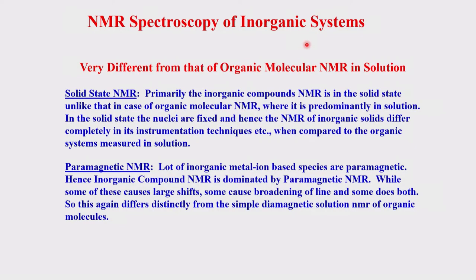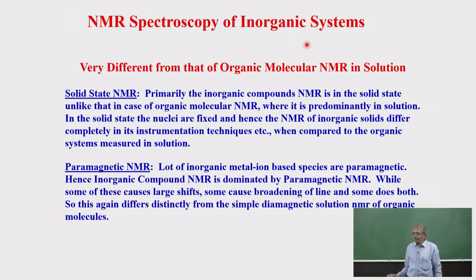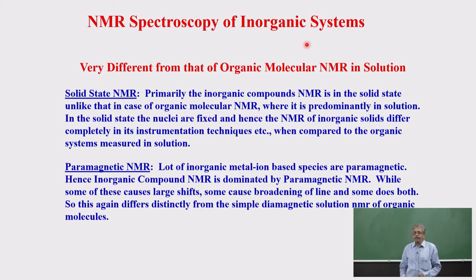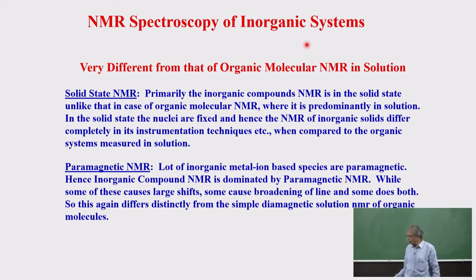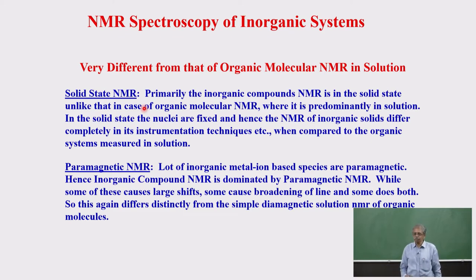Why are we dividing NMR into organic and inorganic? Organic compounds are studied primarily in solution — in organic solvents, polar or non-polar, and occasionally in water. You look at the molecule in solution, and in the solution state the molecules are in fast tumbling and fast rotation, which nullifies additional magnetic fields that would otherwise broaden the peaks. For inorganic compounds, measurement is primarily done in the solid state; very few inorganic compounds are measured in solution. That is one major difference between inorganic and organic NMR.